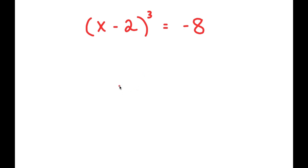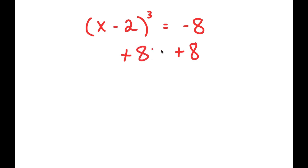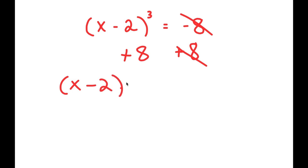In this problem, I have x minus 2 to the power of 3 is equal to negative 8. To solve this, I'm going to first start by adding 8 on both sides. So these two cancel out, and I get x minus 2 to the power of 3 plus 8 is equal to 0.